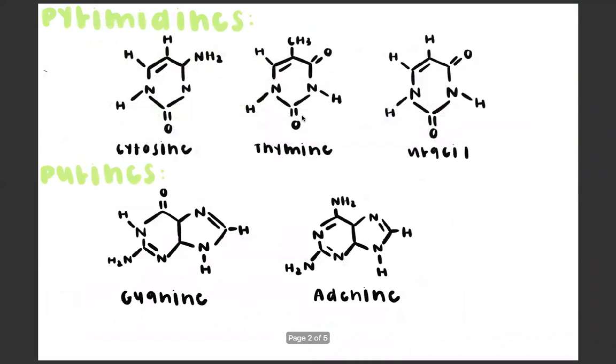Purines are the nitrogenous bases of adenine and guanine, and pyrimidines are the nitrogenous bases of cytosine, thymine, and uracil. These are all five of our nitrogenous bases in their structures.